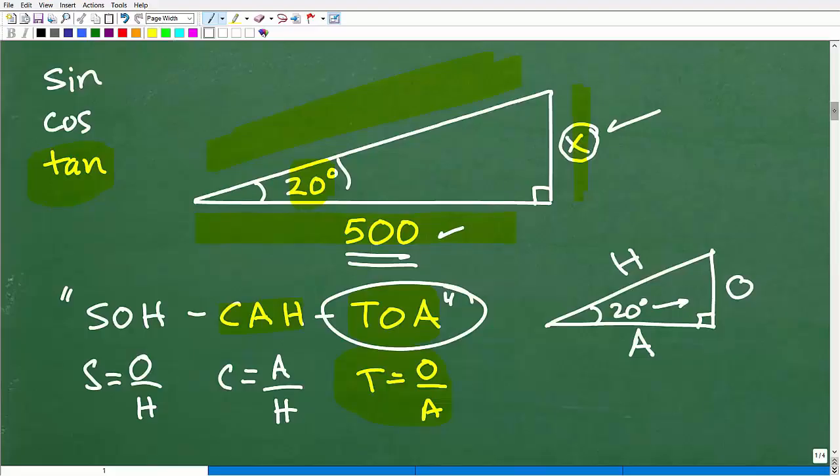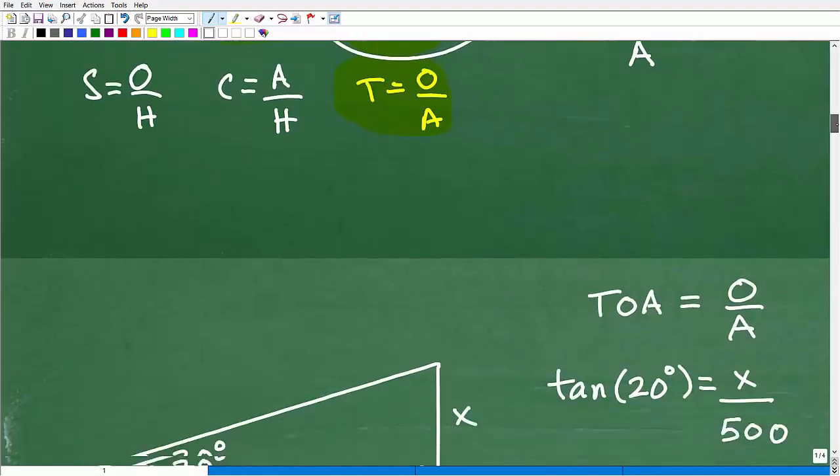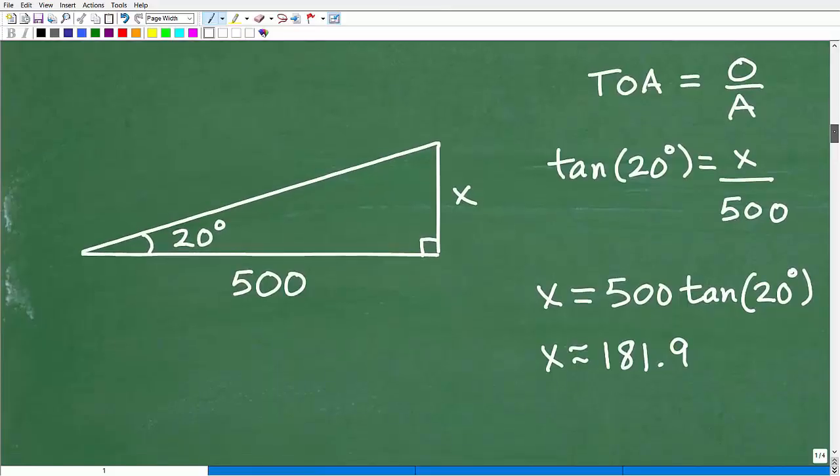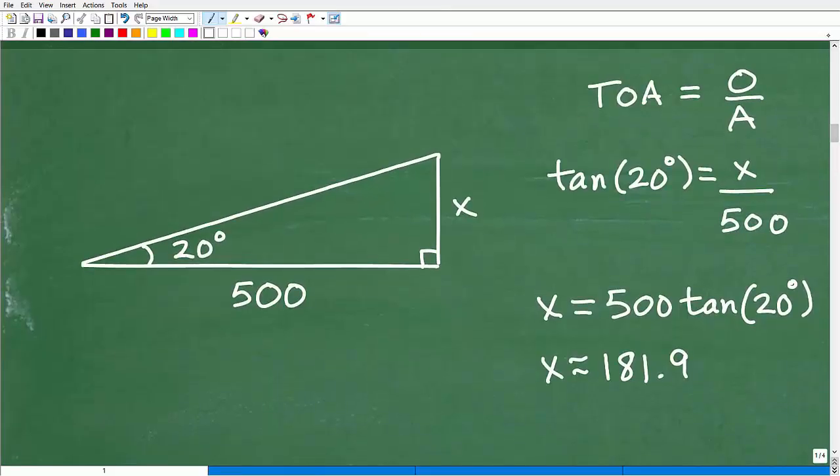All right. So if you understand that, now we can kind of pull this all together. All right. So here's the work. Again, we're thinking TOA, SOHCAHTOA, TOA. So tangent is equal to opposite over adjacent. That's what that stands for. This little TOA. It's a little deal.